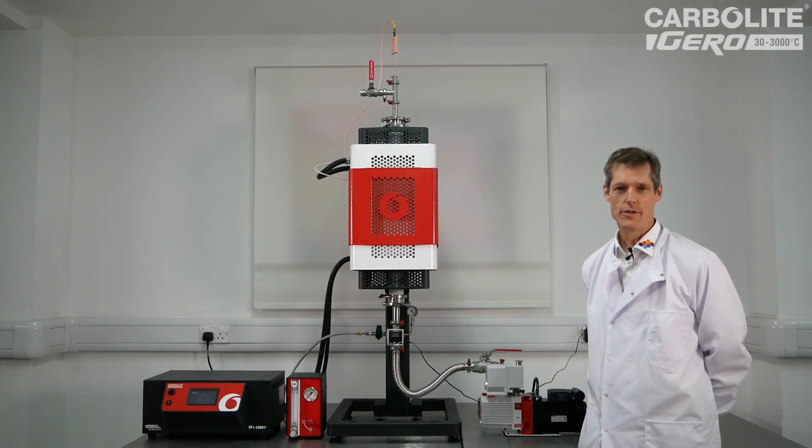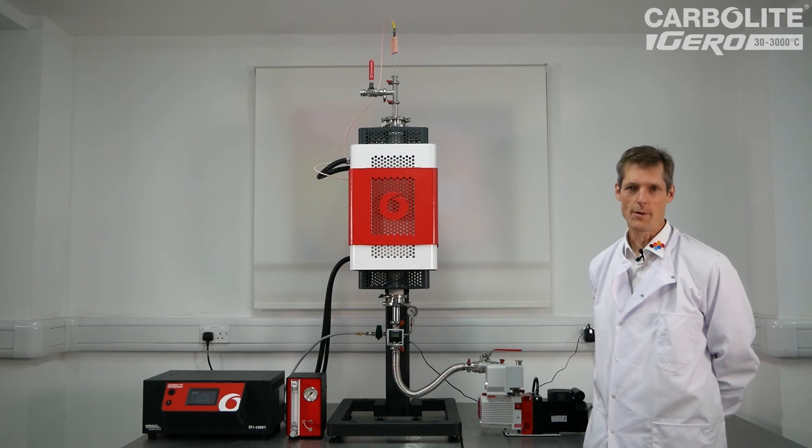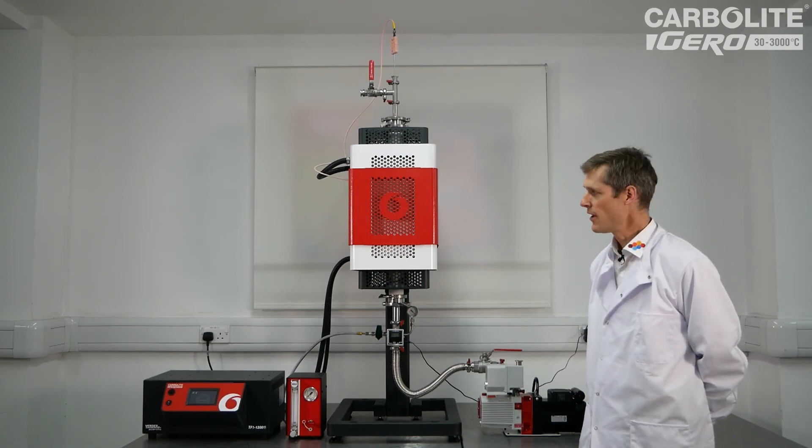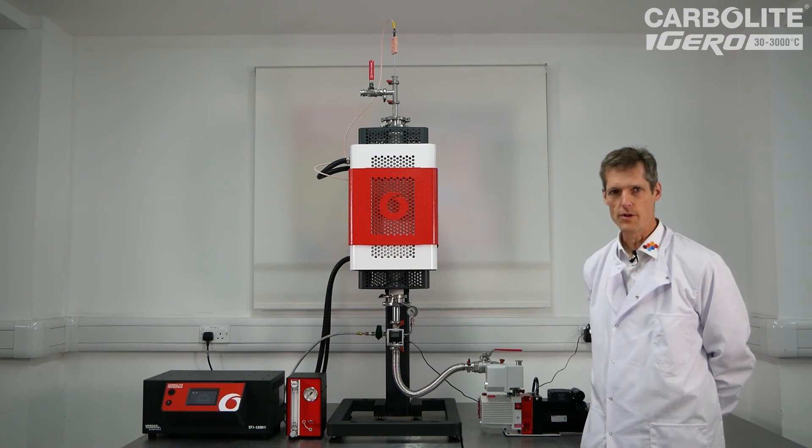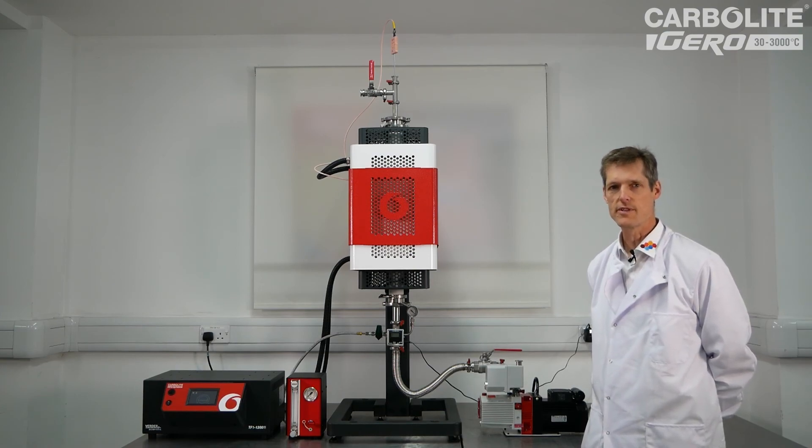So as you can see here, with this modular system that we offer at Carbolite Gero, it's possible to put together anything from a very simple furnace horizontally orientated on the control box up to the sophisticated type of system you see here.